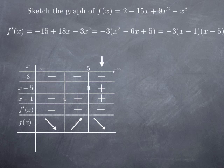Using the first derivative test, we obtain the local extrema, namely a local minimum at 1. To get the value of this minimum, we plug 1 in the original function. In this case, we get 2 minus 15 plus 9 minus 1, which adds up to negative 5.